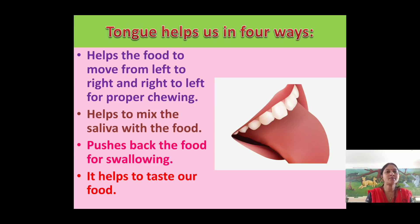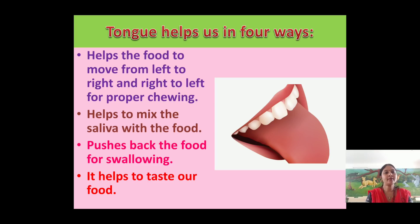Second, the tongue also helps to mix the saliva with the food. Third, it pushes back the food for swallowing — after chewing the food, we swallow it and the tongue helps push it back. And the main use is that the tongue helps us taste our food, whether it is spicy, sweet, sour, or bitter. These are the four ways the tongue helps us.